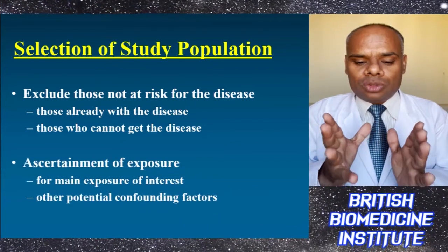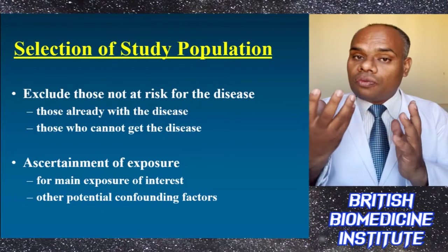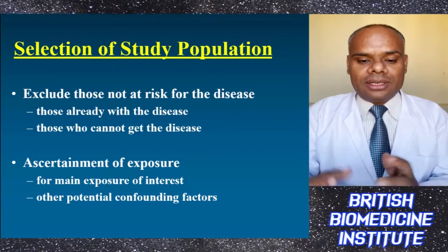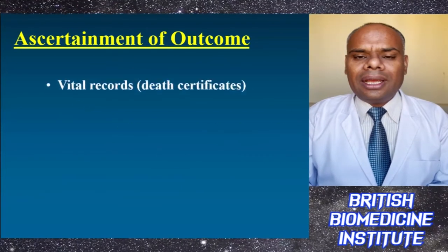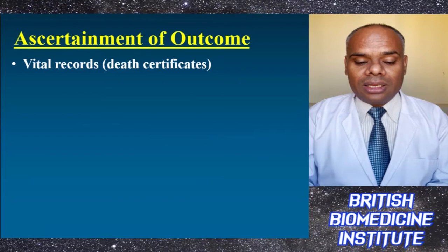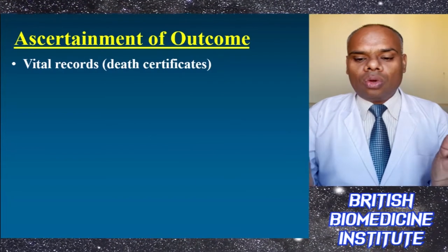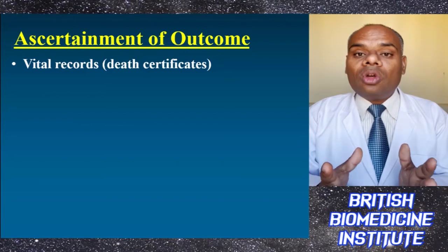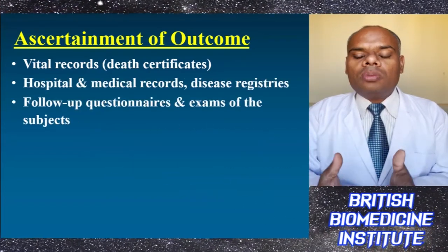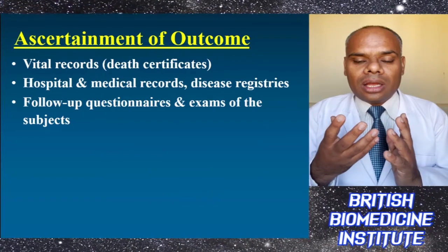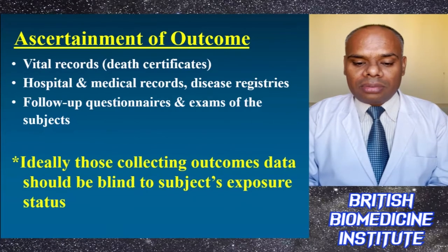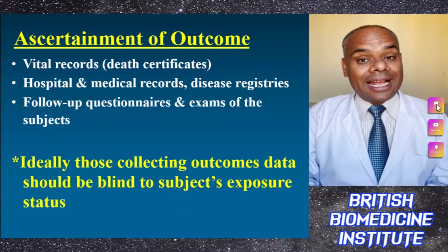There has to be an ascertainment of exposures for the main exposure of interest and other potential confounding factors. To ascertain disease, we record vital signs and vital records like death certificates, hospital or medical records, or disease registries. There should also be follow-up through questionnaires or patient examinations. Ideally, those collecting outcome data should be blind to the subject's exposure status.